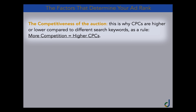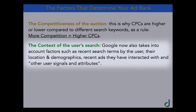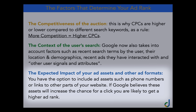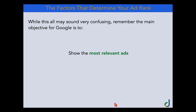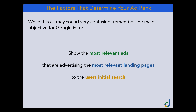The competitiveness of the auction is straightforward: more competition equals higher CPCs. Google is also using more AI and automated learning, making the context of the user's search increasingly important. Google takes into account the user's recent search terms — what they've been searching and how relevant that is to your ads and landing pages. Beyond that, there's the expected impact of your ad assets and other ad formats. If Google believes that assets will increase the chance of a click, you're more likely to get a higher ad rank.